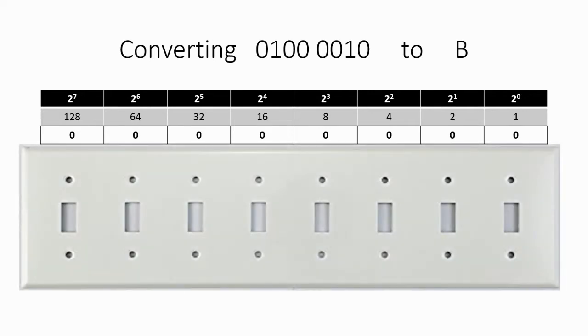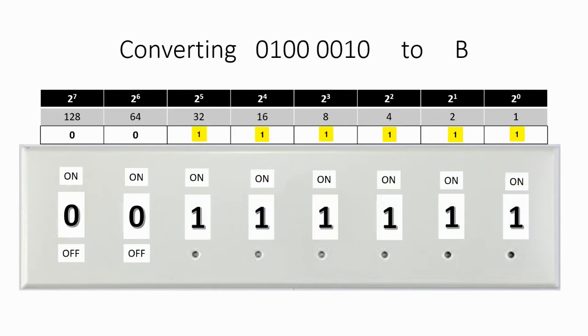So let's imagine a light switch that has eight switches. The switch can be turned on or off. As we turn on those switches, we're adding those values together. And as we turn them off, they disappear.